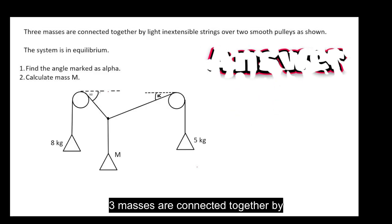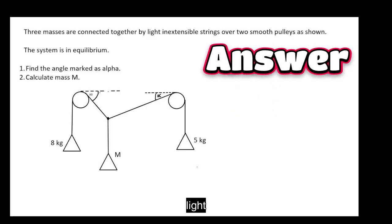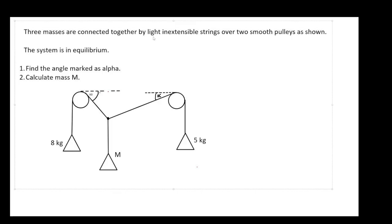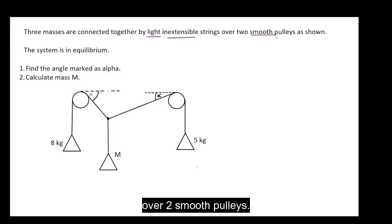Three masses are connected together by light inextensible strings over two smooth pulleys. The system is in equilibrium. It's really important here.